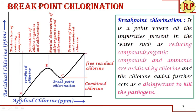Beyond A up to B, the curve increases, showing residual chlorine as applied chlorine increases. This is due to the formation of chloro-organics and chloramines — that is, organic impurities and nitrogen compounds like ammonia and urea form chloramines. This is reflected as increasing residual chlorine from A to B. We call this combined chlorine because the chlorine is in combined form — as chloro-organics and chloramines — not as free residual chlorine. So up to B, the chlorine is in combined form.